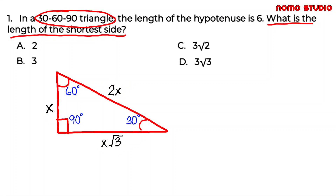Using this proportion, we can now calculate the shortest side of the triangle. Since the shortest side is half the length of the hypotenuse, we will just have to divide 6 by 2 to get the length of the shortest side. Since 6 divided by 2 is equal to 3, therefore the length of the shortest side is just 3.